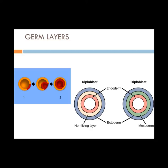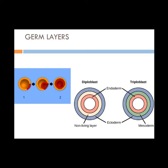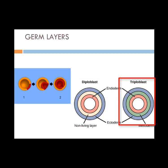The embryo layers that result from gastrulation are called germ layers. They form in all animals except sponges. The ectoderm develops into the skin, nerves, and sense organs. The endoderm develops into the digestive and respiratory tracts. Bilateral organisms have a third germ layer called the mesoderm, which develops into muscles, the reproductive system, and the excretory system. Animals with radial symmetry and two germ layers are diploblastic, and animals with bilateral symmetry and three germ layers are triploblastic.